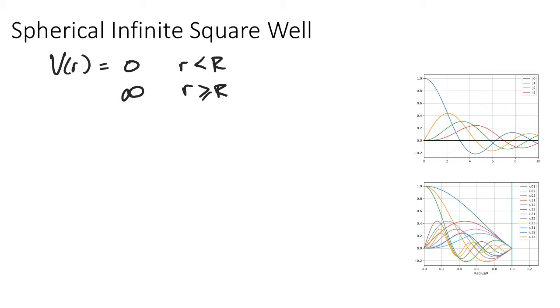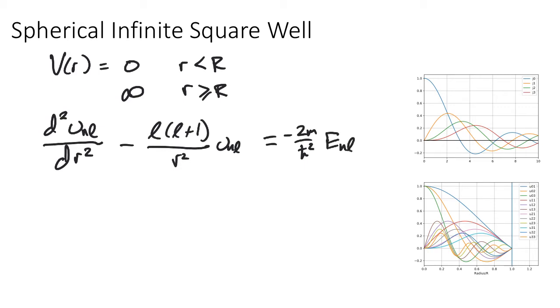With this potential in the Schrödinger equation that we had before, we can write down the radial part. The angular parts still give you spherical harmonics, but the radial part with this becomes d squared U_nL by d R squared minus L times L plus one over R squared times U_nL. There's no V term because V is zero where we're solving it. So that equals minus two M over h bar squared, E_nL times U_nL.